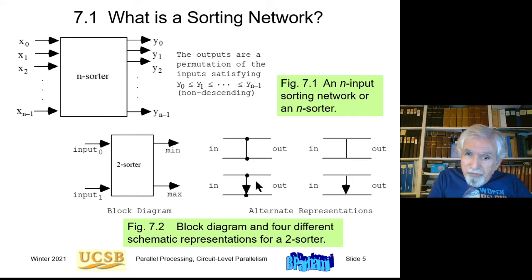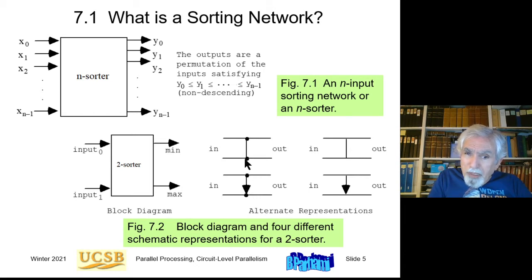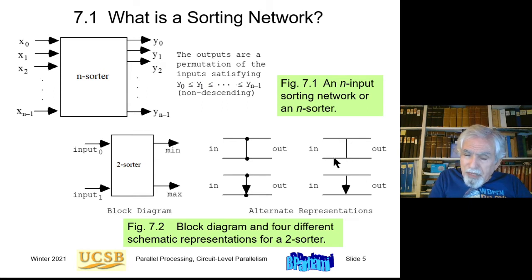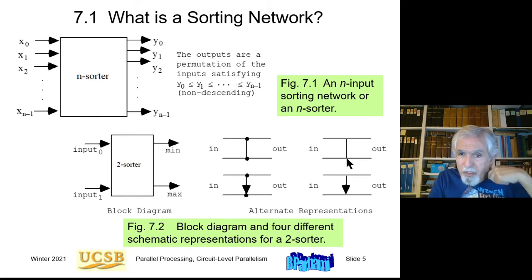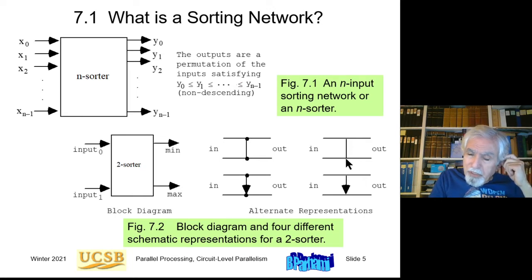With this notation we can also reverse this arrow, using a two-input sorter that sorts in the reverse direction, putting the larger value at the top and smaller value at the bottom. To make things even simpler, we eliminate the two dots, because it's implicit when a line segment connects two horizontal lines that it's a box comparing those two values. If we want to explicitly specify the direction of sorting, we use an arrow instead of just a line segment.